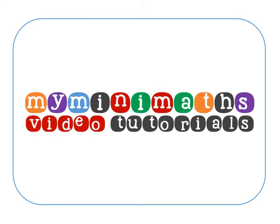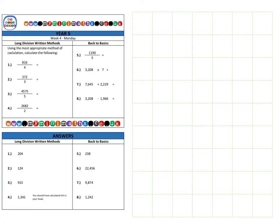Hello and welcome to today's myminimaths.co.uk video tutorial. Today we're going to be dividing three and four digit numbers by a single digit divisor. A divisor is just the number we're dividing by.